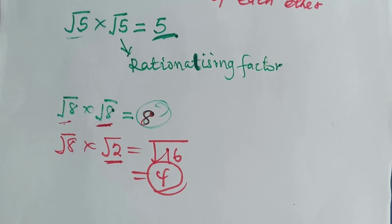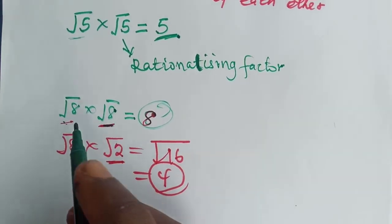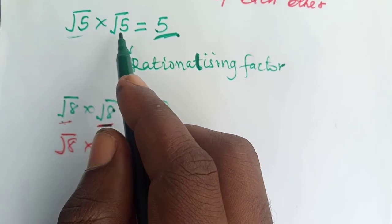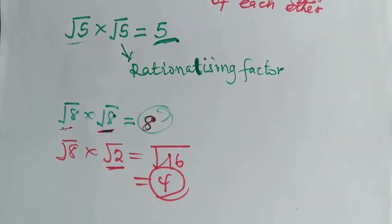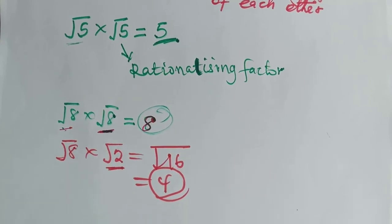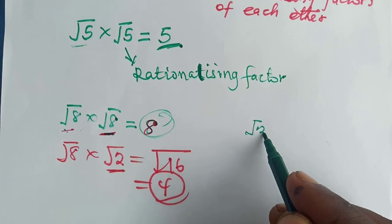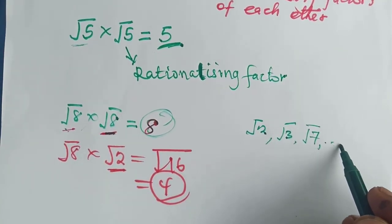But if you want to rationalize a surd and you are in doubt of what to multiply it with, just multiply the number by itself — as in root 8 by itself, or root 5 by itself. Remember, this technique of multiplying a surd by itself to get a rational number works only if it is a quadratic surd, like root 8, root 5, root 2, root 3, root 7, root 4.